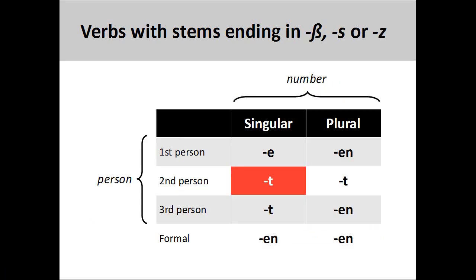Finally, a few regular verbs have a stem ending in '-ß', '-s', or '-z', which requires another slight variation to the conjugation pattern. The second person singular ending drops the 's' from the regular '-st' ending. This exceptional ending is marked in red on the screen.